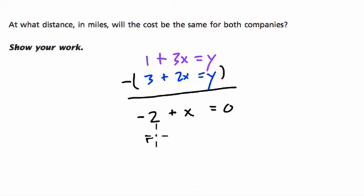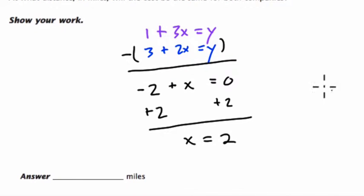To solve for X, I'm going to add 2 to both sides, and this tells me that the two equations are equal when X is 2. And let's just verify that by plugging in 2 for X to both equations, and that will tell us the cost.